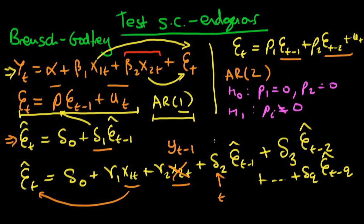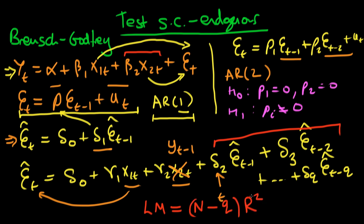How do we statistically test these coefficients? We can either use an F-test since we have multiple coefficients, but traditionally — and this is the explicit form of the Breusch-Godfrey test as normally stated — we form an LM statistic equal to the number of observations minus the order of serial correlation Q, times the R-squared of the auxiliary regression with all Q lagged error terms included. Under the null hypothesis of no serial correlation, this LM statistic follows a chi-square distribution with Q degrees of freedom. If the LM statistic exceeds the 5% critical value of the chi-square distribution with Q degrees of freedom, we reject the null of no serial correlation; otherwise, we conclude that we don't have serial correlation.